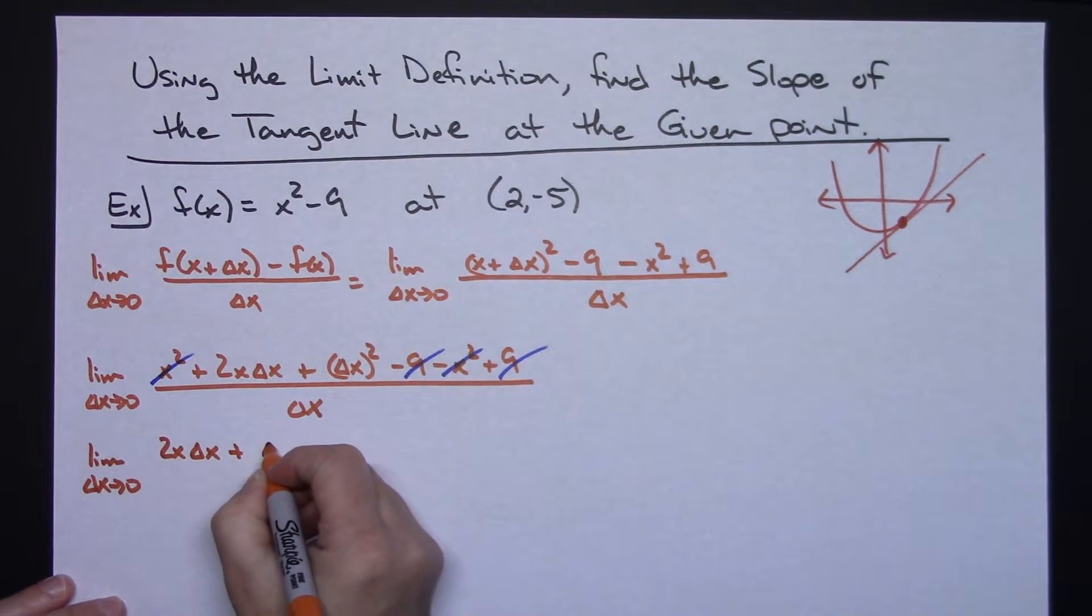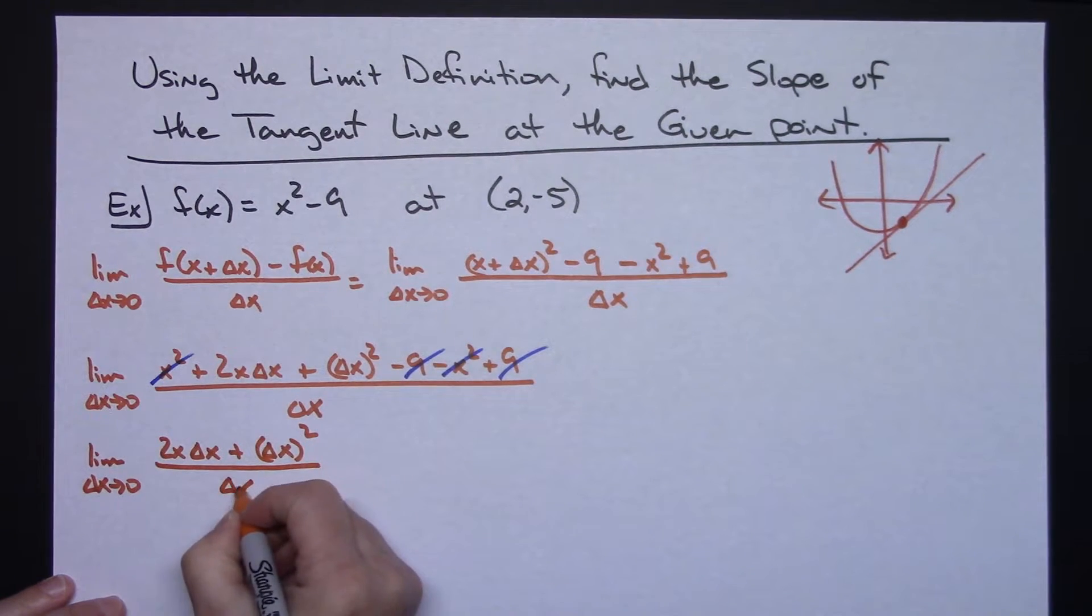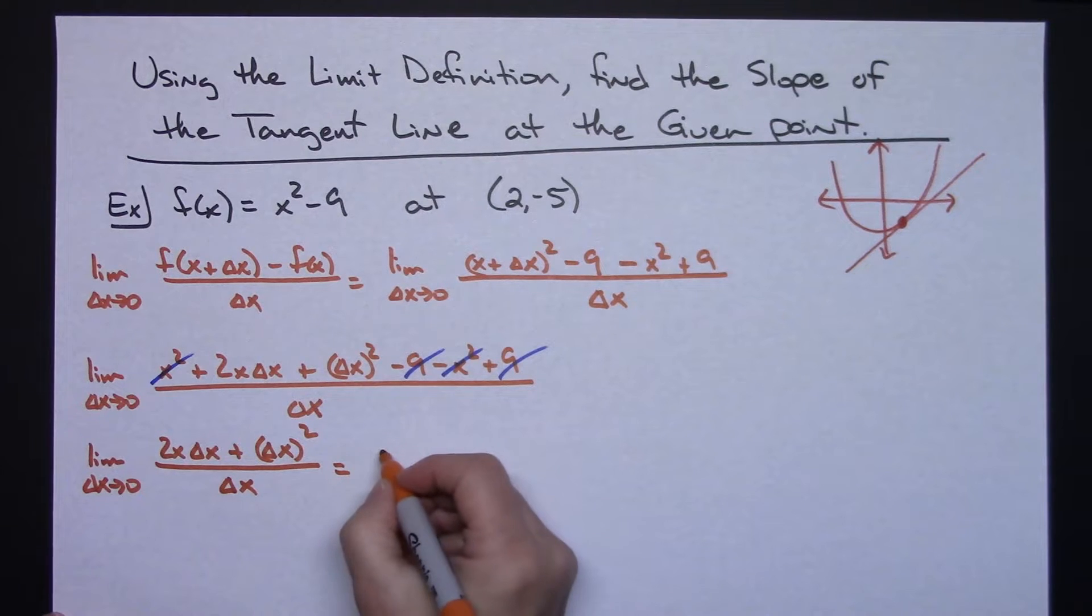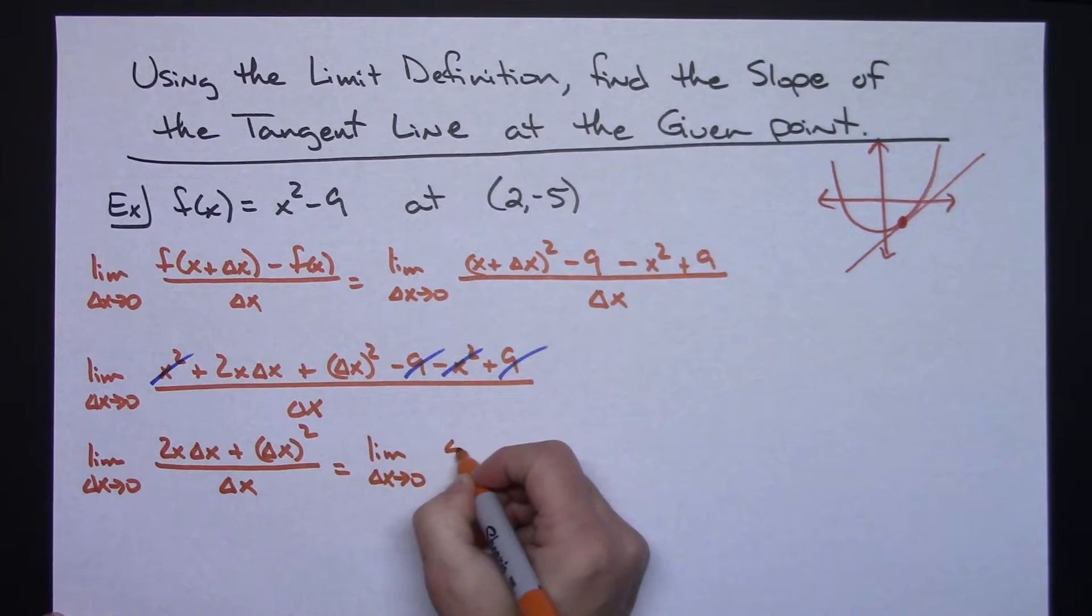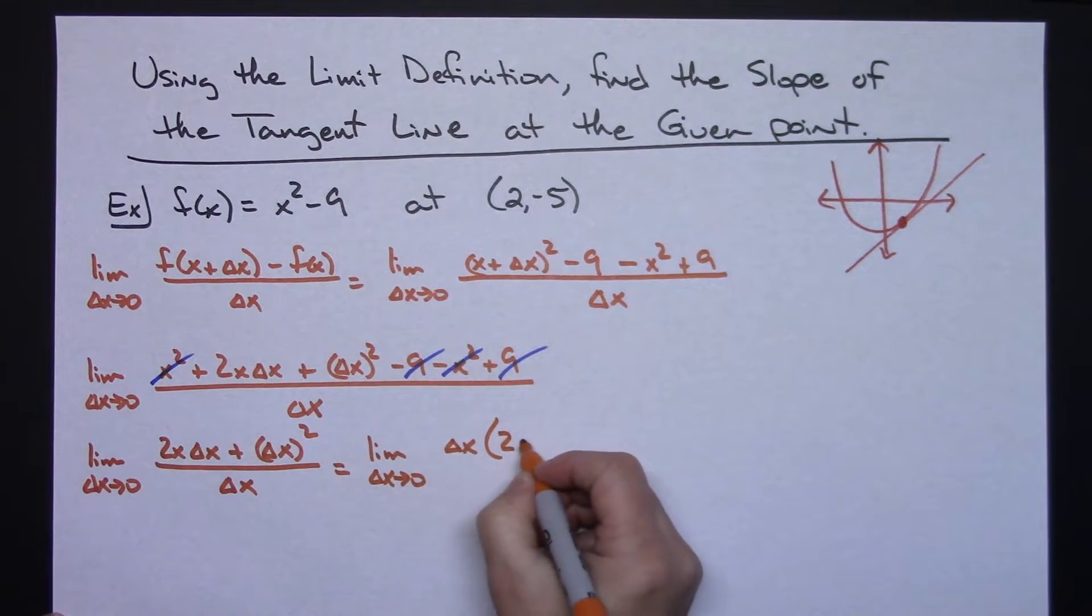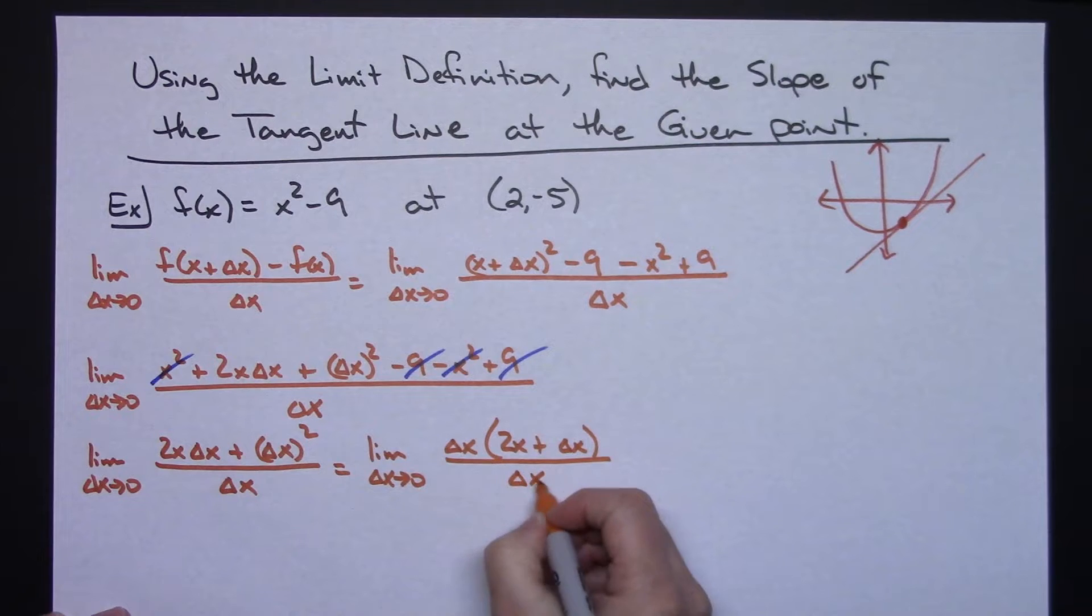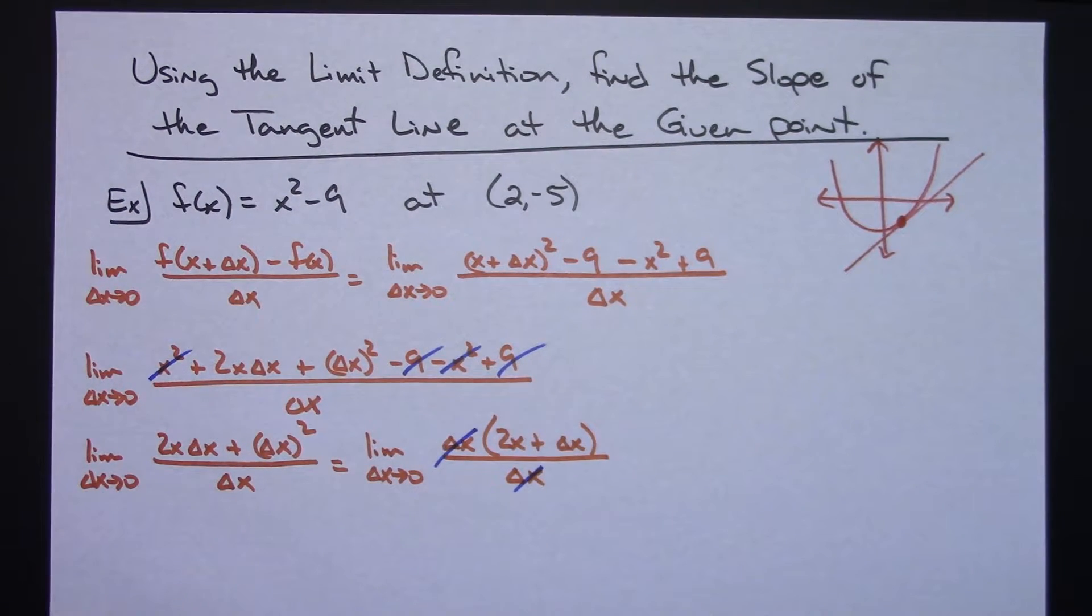Then we've got the limit as Delta X approaches 0 of 2X Delta X plus Delta X squared all over Delta X. I need to factor out a Delta X on top. Factor out that Delta X, I'm going to have 2X plus Delta X all over Delta X. I can take that Delta X and cross those out.